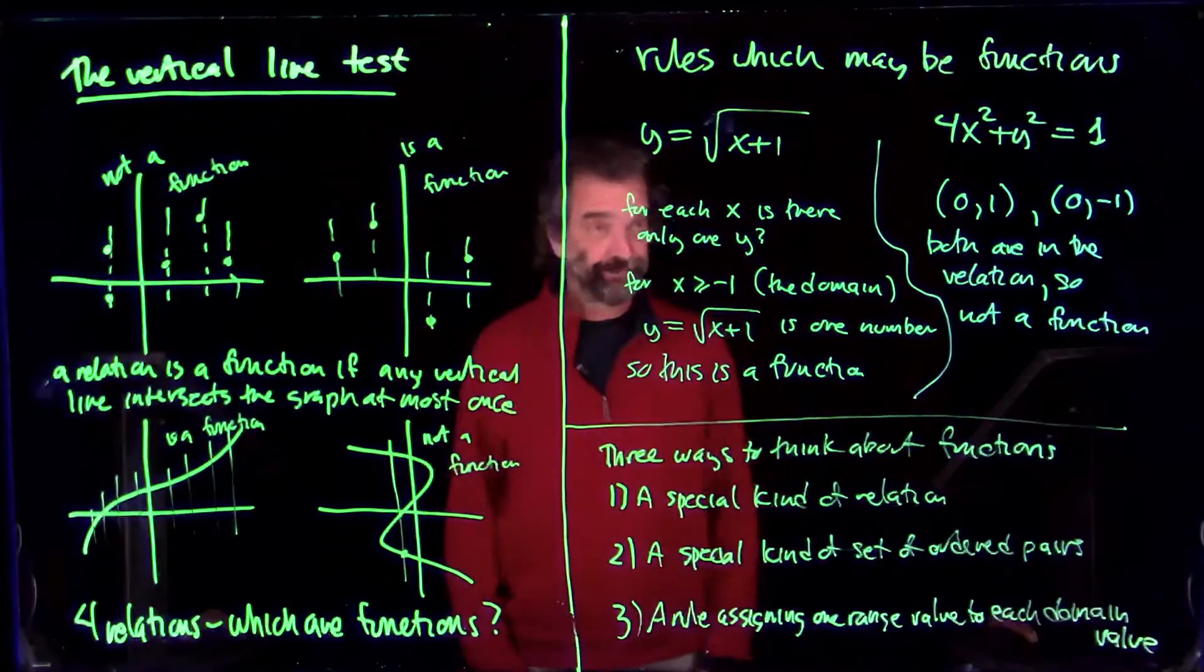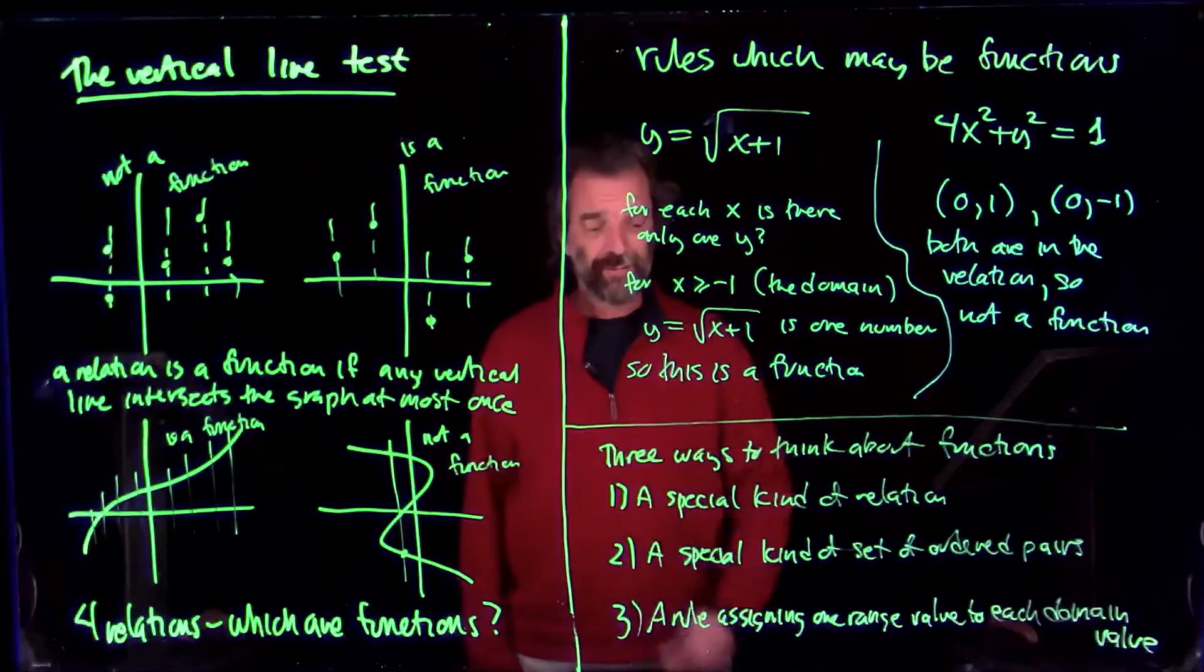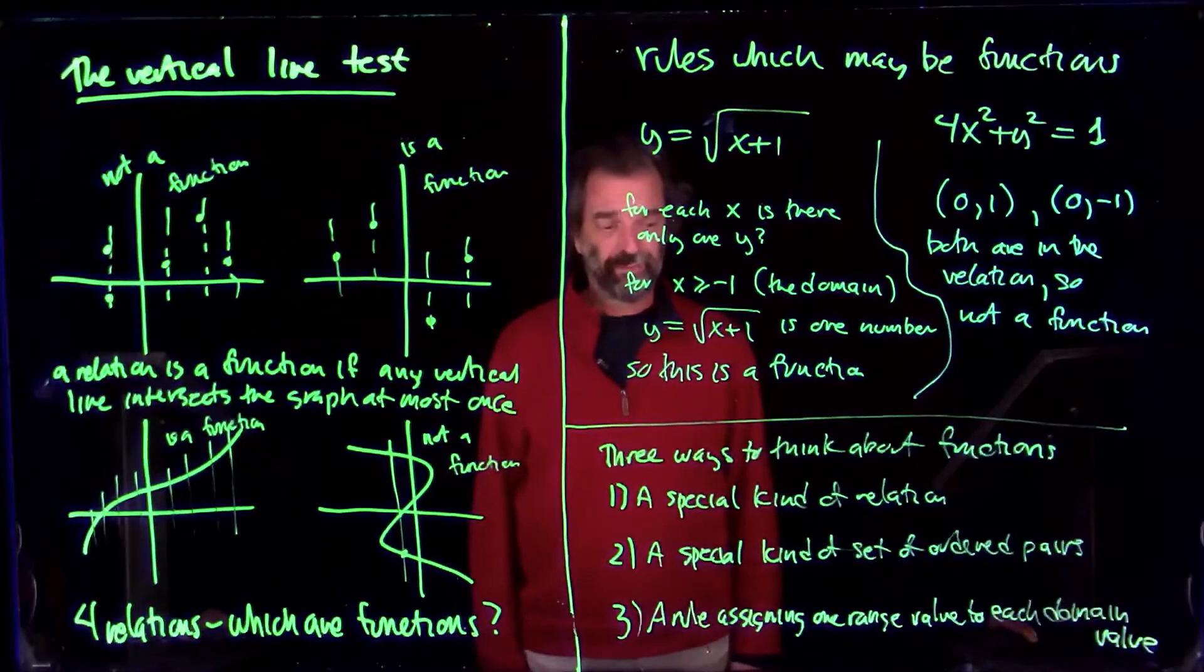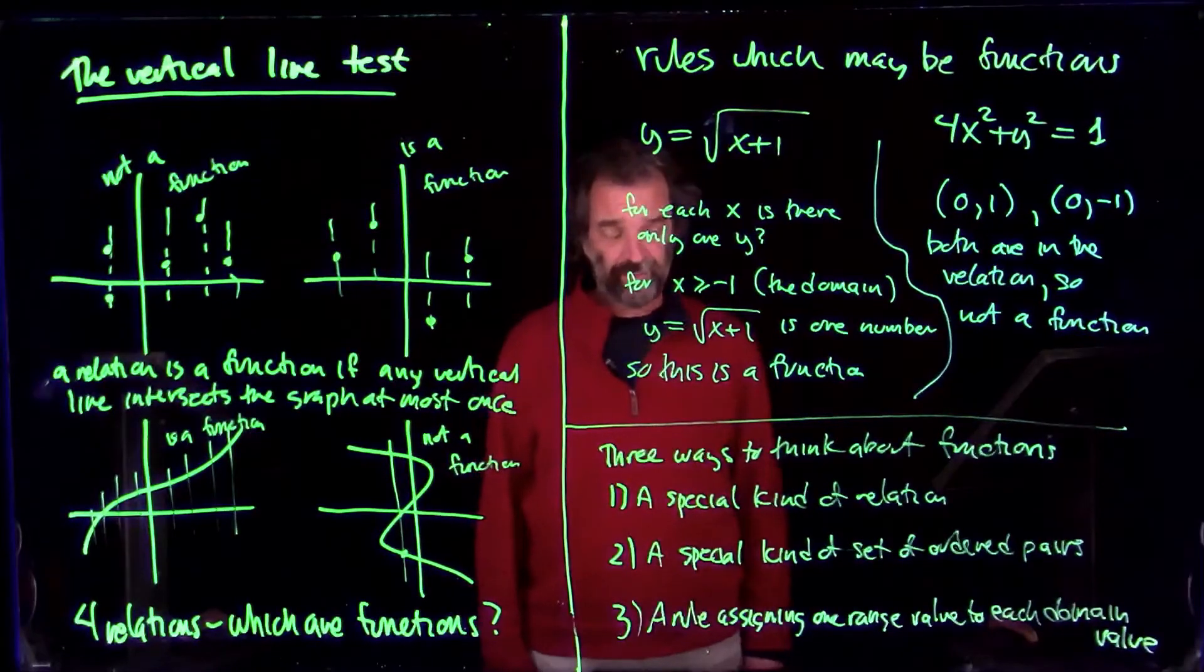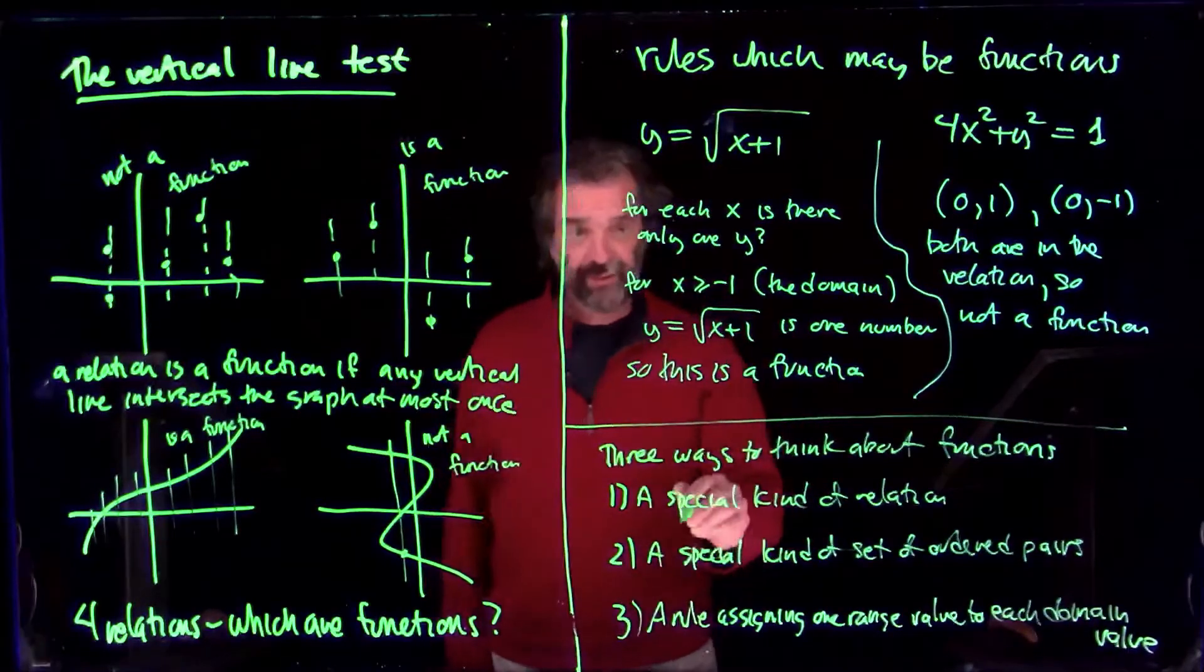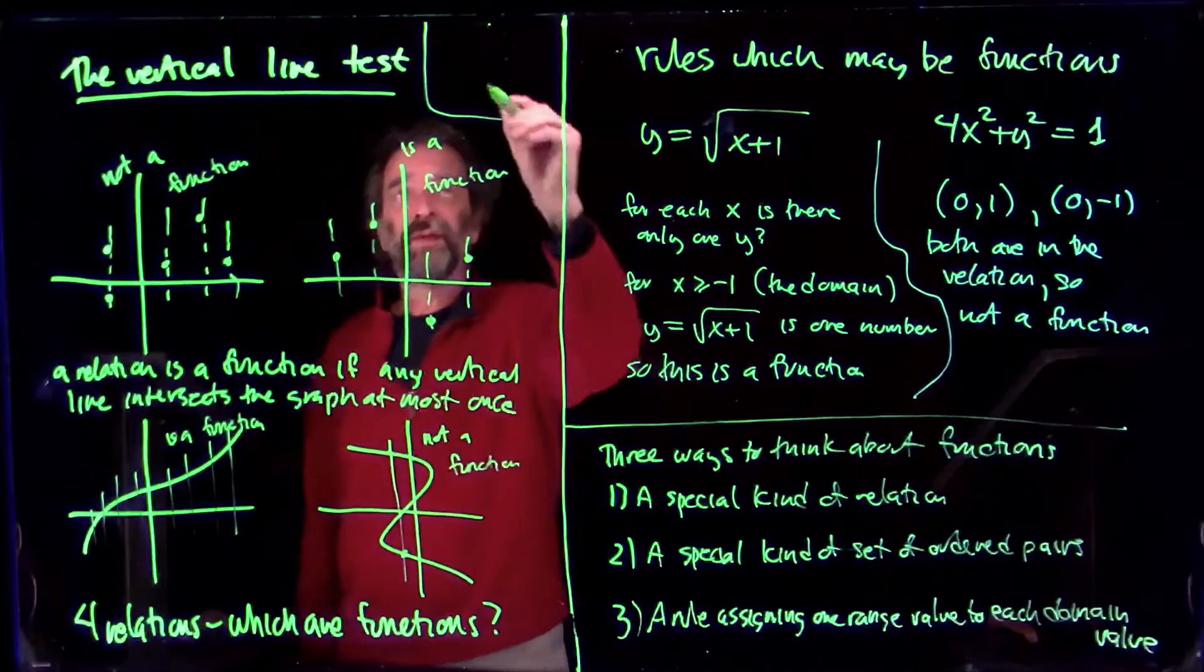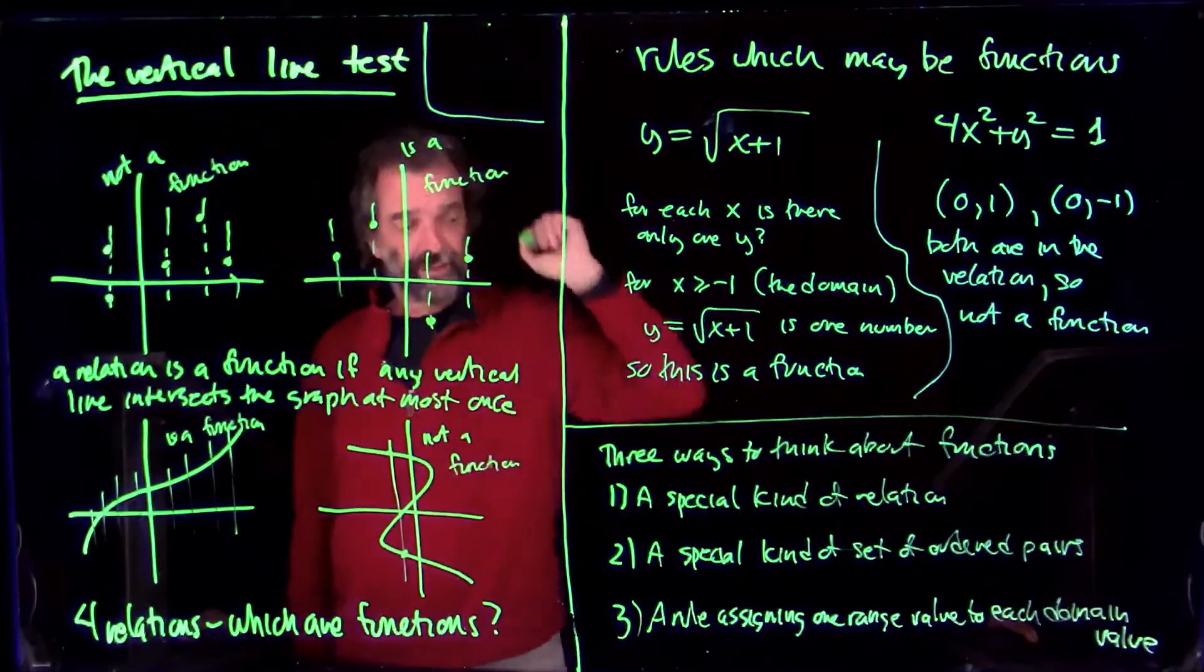So how could you set up a situation where it looks like a rule would assign two values, say, in the range to one in the domain? And a good example of that is if the rule... I'll put it up here because I just thought of it. But the rule was... I'm thinking now, maybe I'm messing up here.